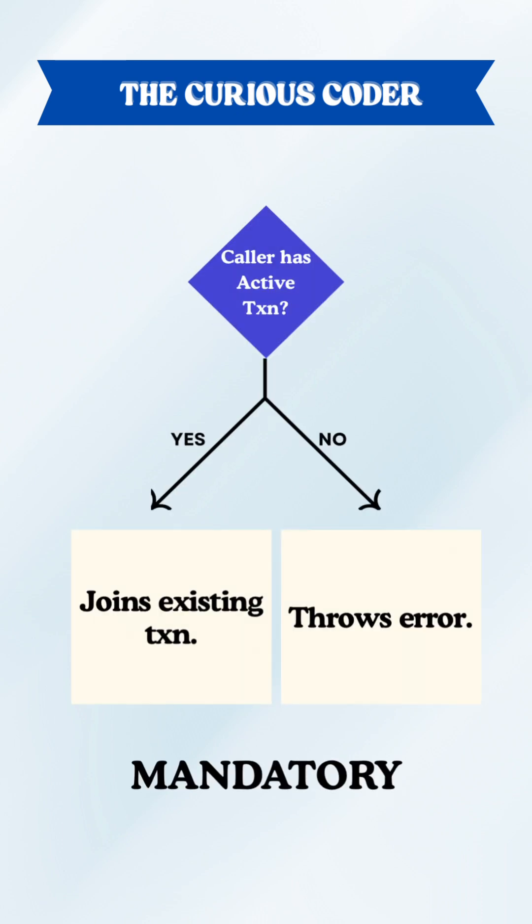Mandatory throws an exception if a transaction does not exist, otherwise joins the transaction. For a complete hands-on experience, check out the detailed YouTube video.